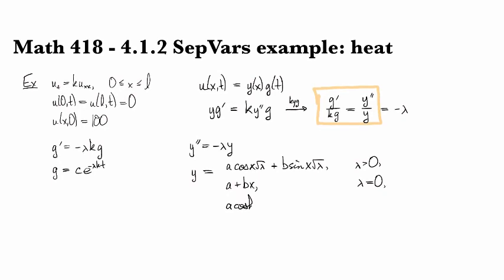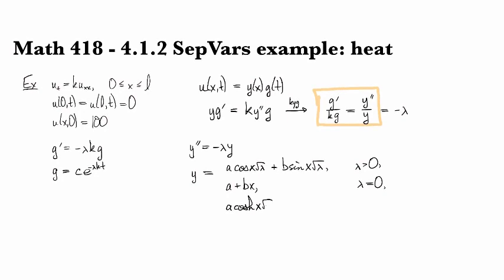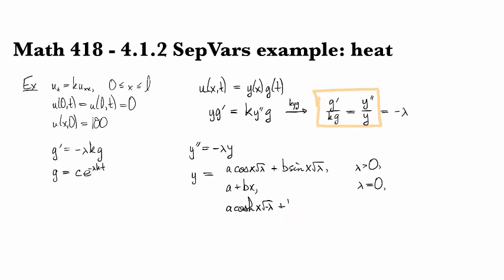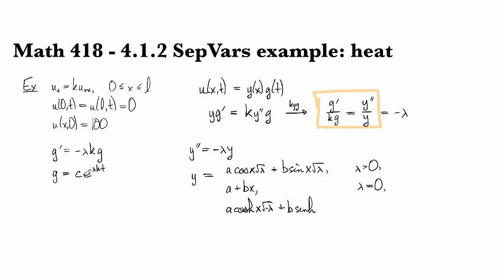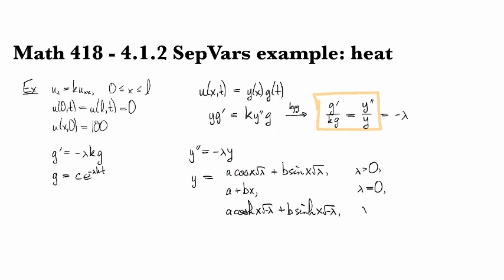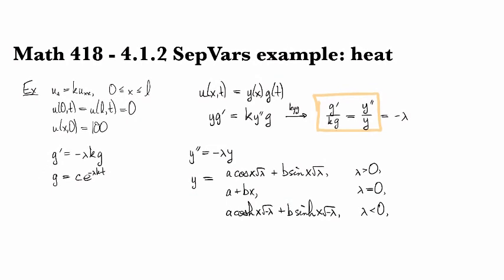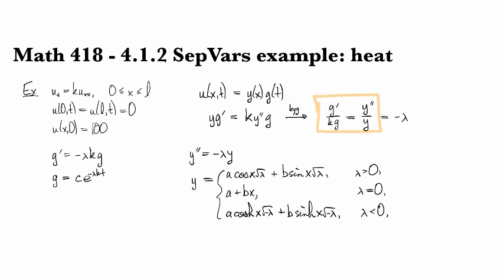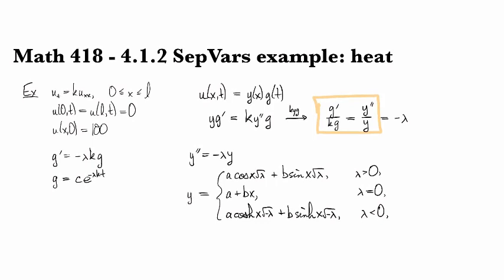And if lambda is negative, this will be a times cosh x root minus lambda plus b sinh x root minus lambda. So that's in the case when lambda is a negative number.